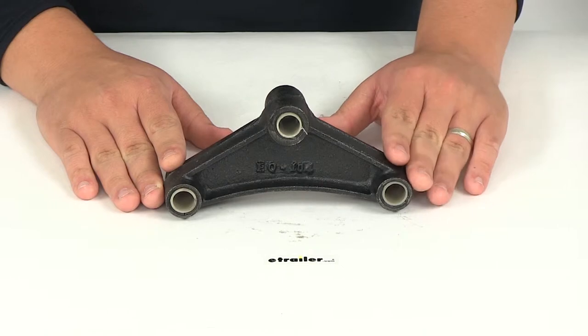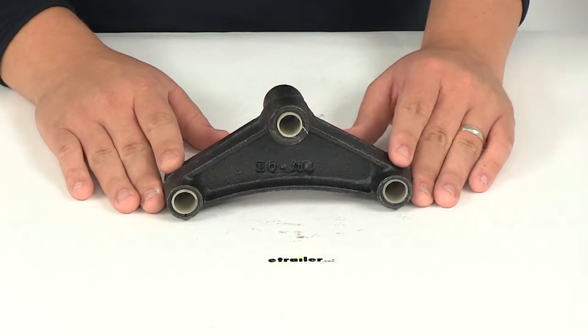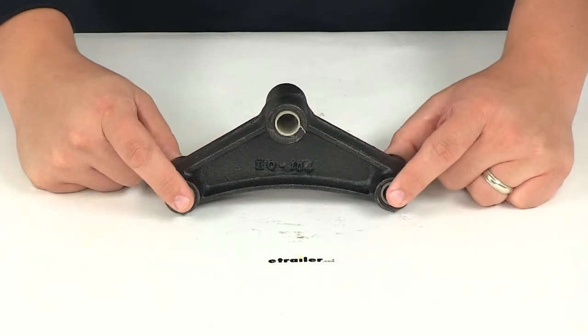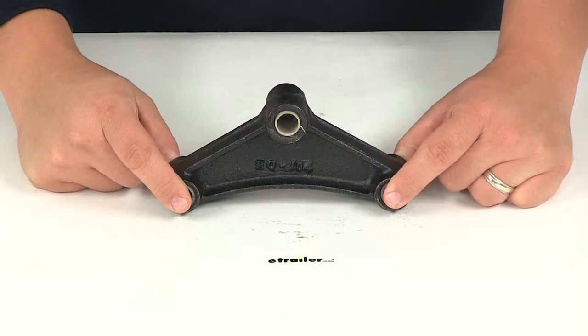It connects double I springs on dual or triple axle trailers. The springs attach to the ends of the equalizer with shackle straps, which are sold separately.